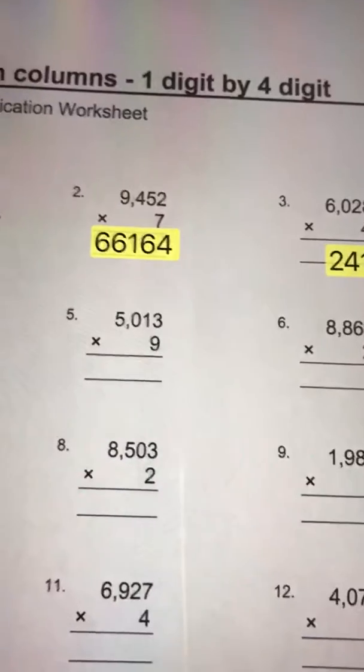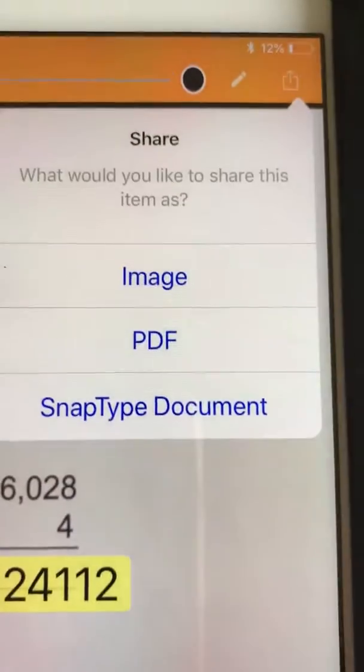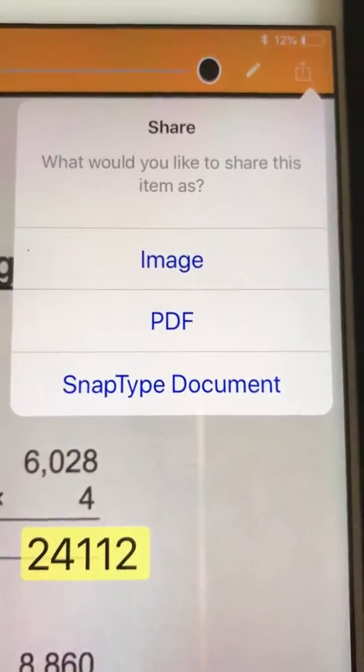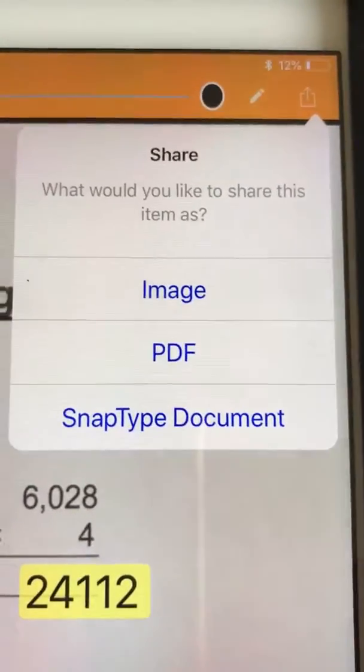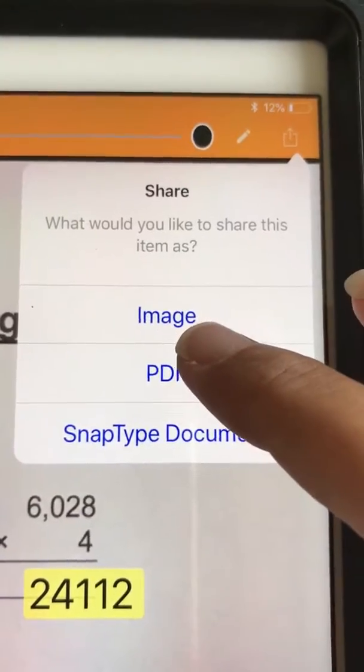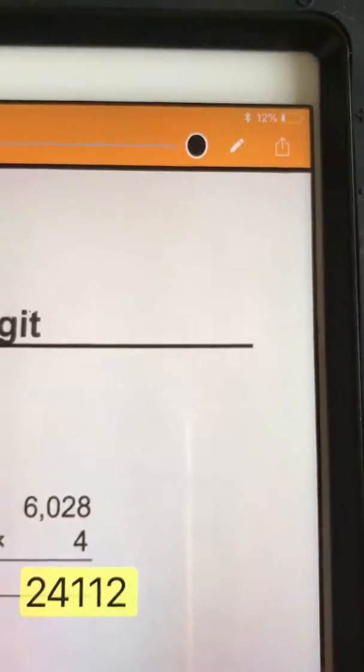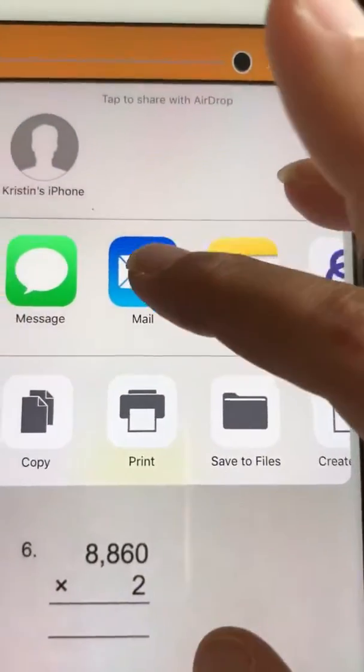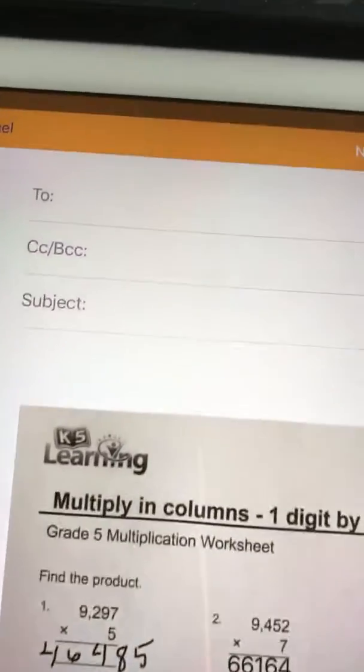And then in order to save this, you go back up to the top and you can send it to a few different places. You can save it as an image or a PDF, because then a teacher can open it up in their email using whatever they have that reads PDFs on their computer. So save it as a PDF, and then right from there you could email it to your teacher.